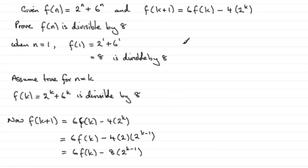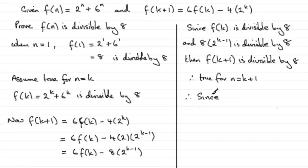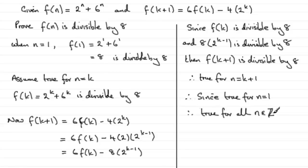Since f(k) is divisible by 8 and 8 × 2^(k-1) is divisible by 8, then f(k+1) is divisible by 8. So it is therefore true for n = k+1. Therefore, since true for n = 1, it must therefore be true for all n which are positive integers.